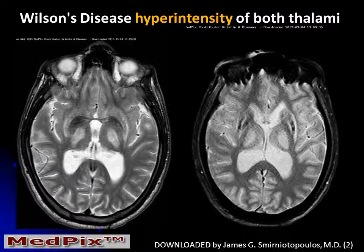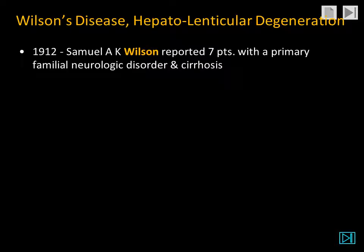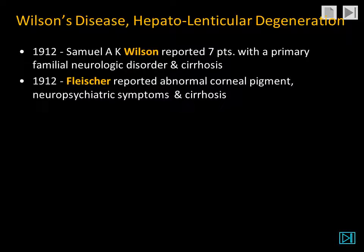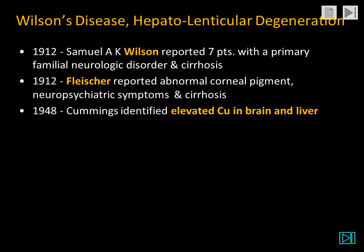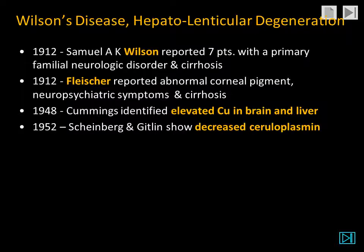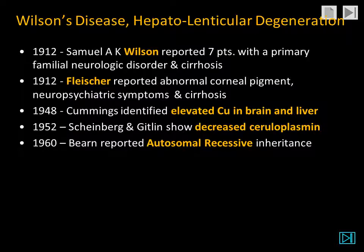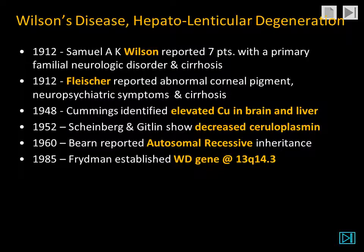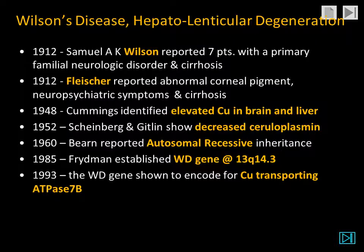The patient also had abnormalities involving the thalamus and the lateral lenticular nuclei or the putamina bilaterally. Wilson in 1912 reported seven patients with a primary familial neurologic disorder associated with cirrhosis. Fleischer also in the same year reported abnormal corneal pigment and neuropsychiatric symptoms associated with cirrhosis. Cummings identified elevated copper in the brain and liver. Shearing and Gitlin demonstrated decreased serum ceruloplasmin. Byrne reported this disease to be autosomal recessive. Friedman established the gene as being on chromosome 13, and in 1993 the Wilson's disease gene was shown to encode for a copper-transporting enzyme, ATPase 7b.